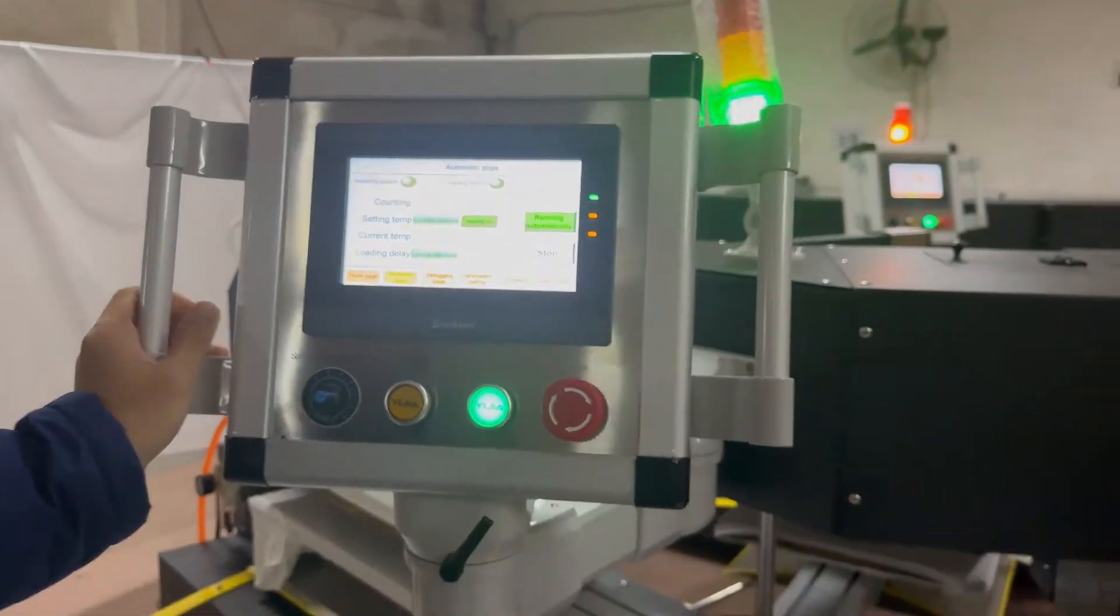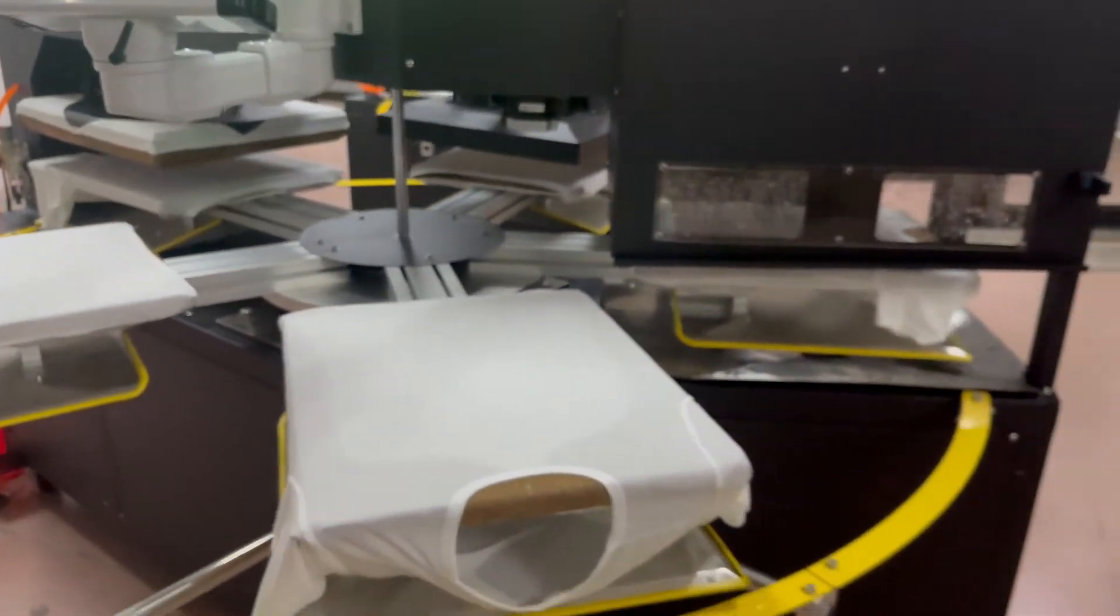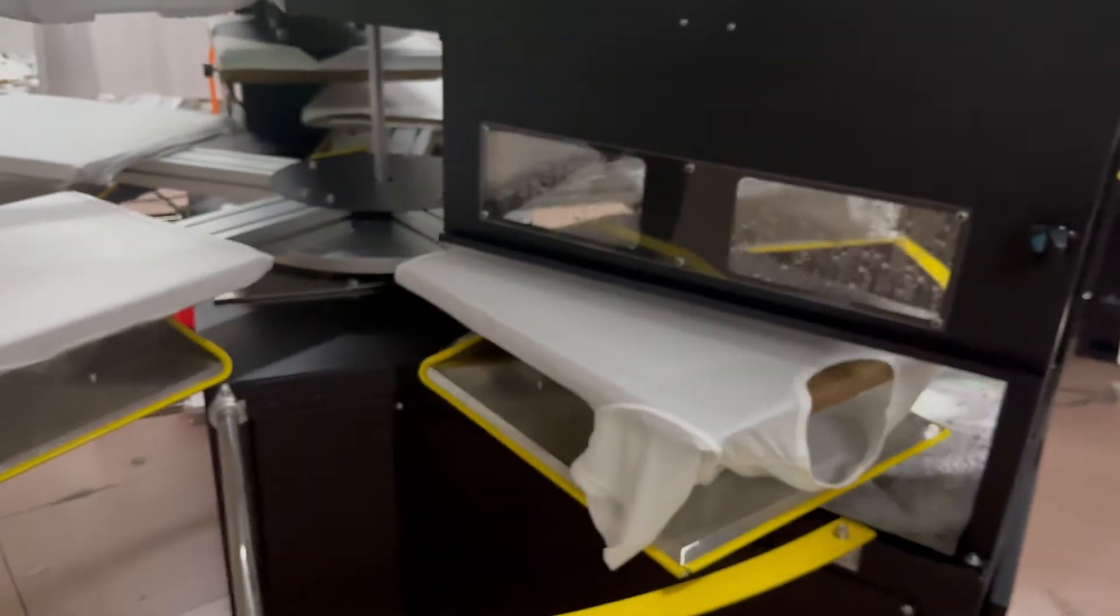It has five stations: loading station, pre-treatment station, drying station, heat press station and unloading station.